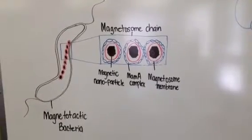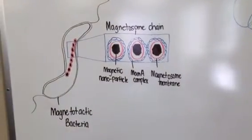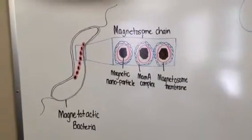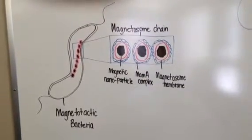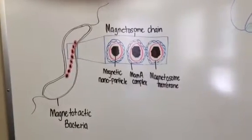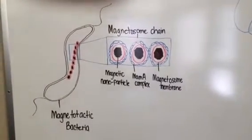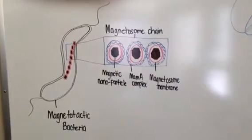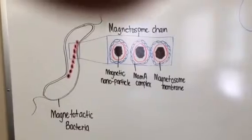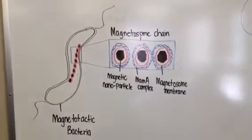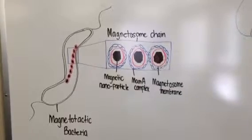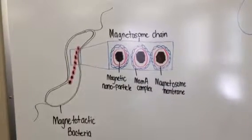Magnetotactic bacteria also use aerotaxis, which is a response to changes in oxygen concentration that favors swimming toward a zone of optimal oxygen concentration. In lakes or oceans, the oxygen concentration is commonly dependent on depth. As long as the Earth's magnetic field has a significant downward slant, the orientation along field lines helps in the search for the optimal concentration. This process is called magneto-aerotaxis.